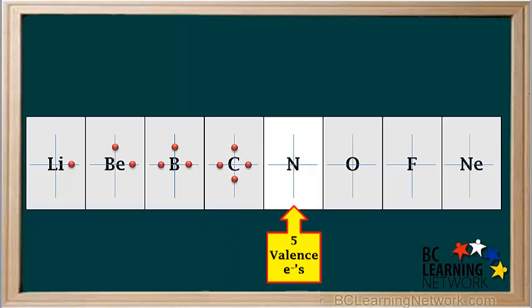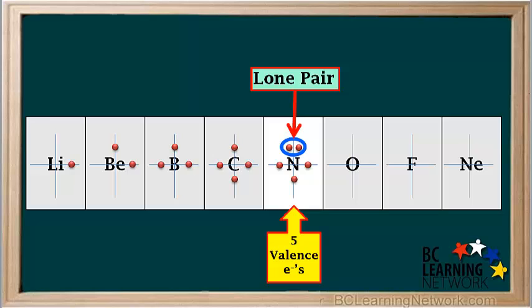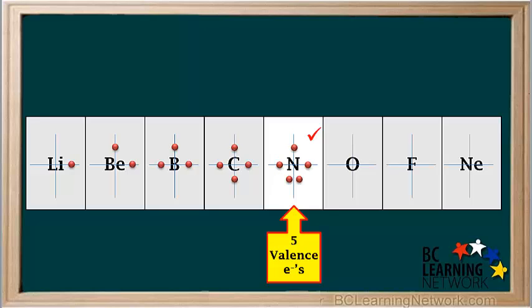Nitrogen has five valence electrons. At this point, electrons start pairing up. Nitrogen has one pair — in this case shown on top — and three unpaired electrons on the other lines of the cross, all at right angles to each other. A pair of electrons in the Lewis diagram for an atom is called a lone pair. A nitrogen atom has one lone pair. The lone pair does not have to be on top; it could be at any of the positions.